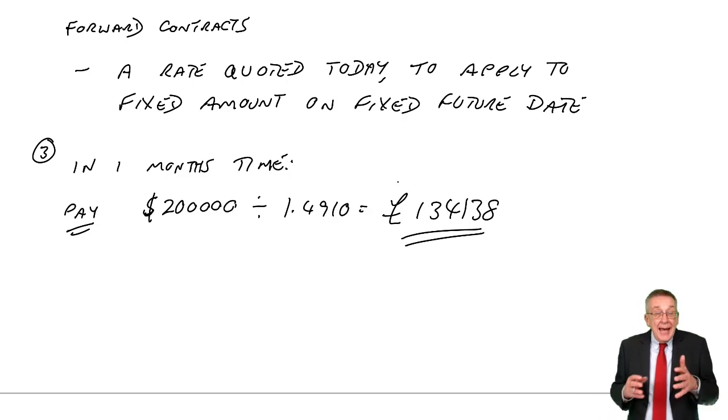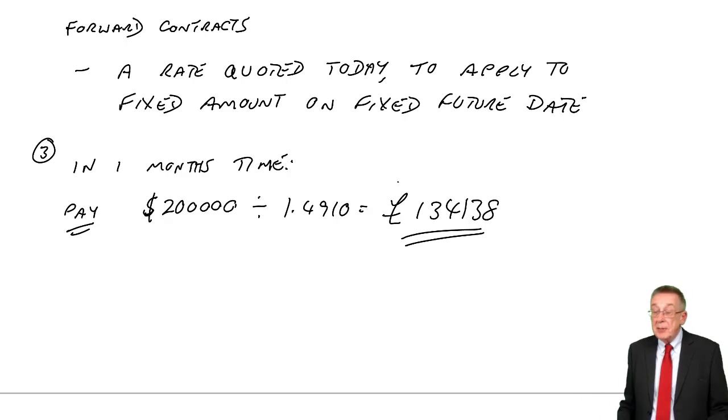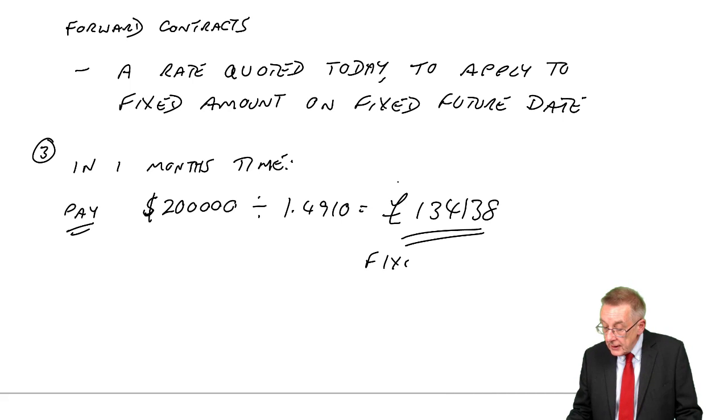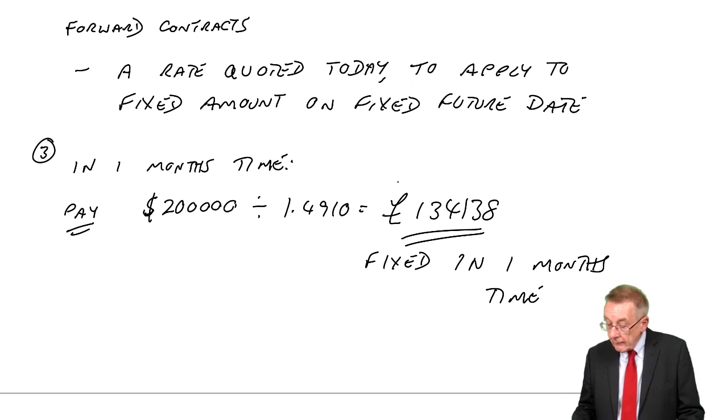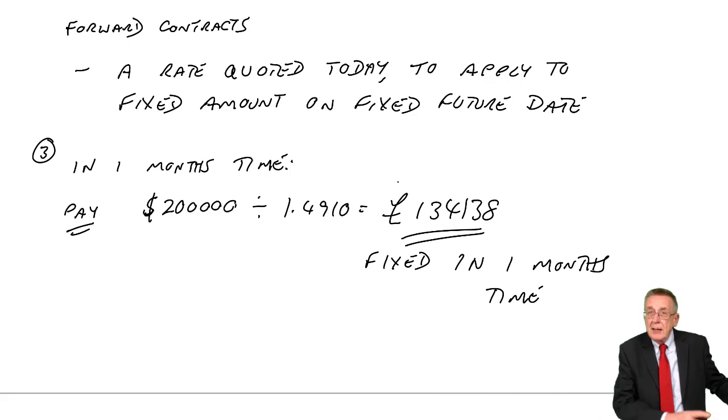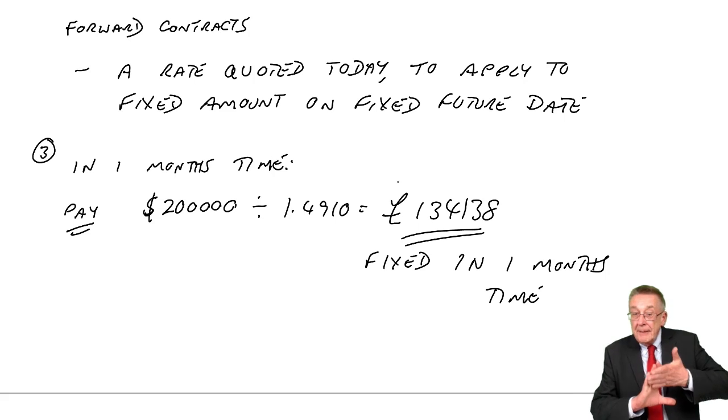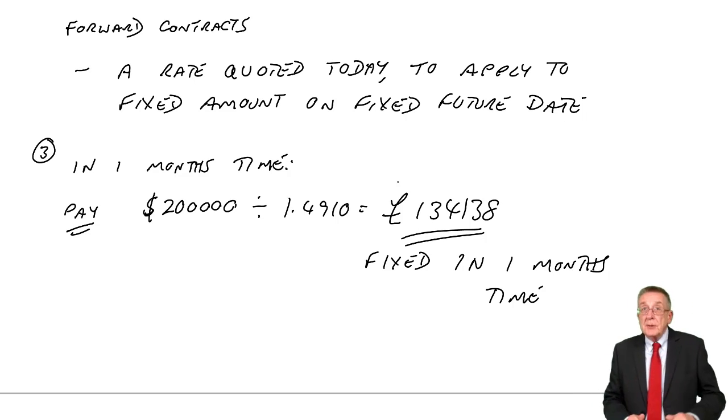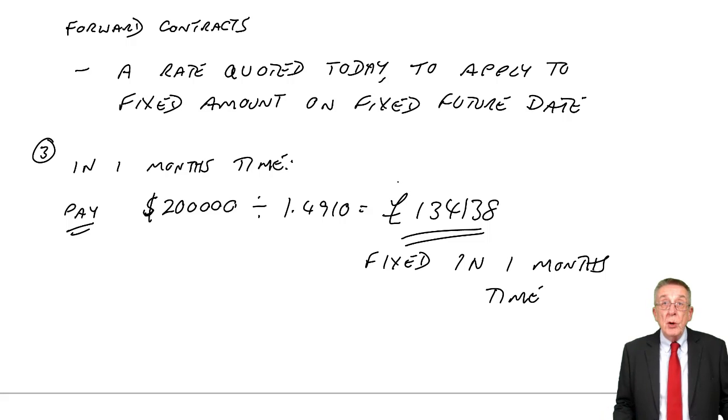Whatever happens to the actual exchange rate is completely irrelevant. This is fixed in one month's time. So it's easy. You need to know which rate to use. We dealt with all that in the first lecture. But a forward rate again, they quote the rate today to apply to a fixed amount on a fixed future date. There's no risk at all.